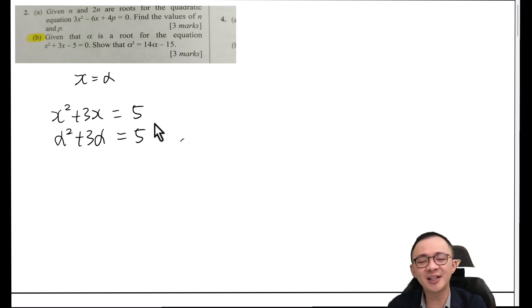So right now my objective is I want to get the alpha power of 3 here. So what I will do is maybe I will multiply alpha for both sides. So if I multiply alpha for both sides, I should get something like alpha power of 3 plus 3 alpha squared equals 5 alpha.